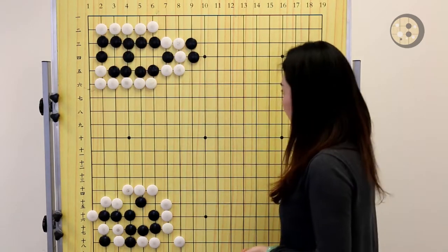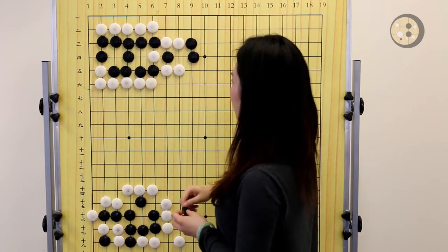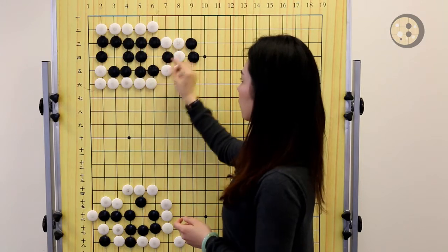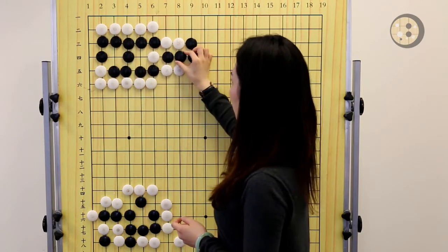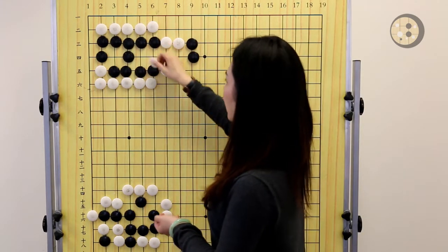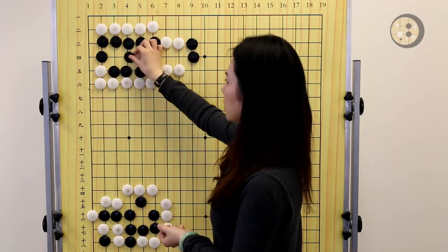If White connects, Black needs to connect. So if White is going to throw in, make sure you're not going to capture it because that will be a false eye. So now you are able to connect with the two stones on the right side. So the correct answer is playing here first and now make two eyes.